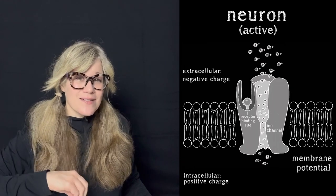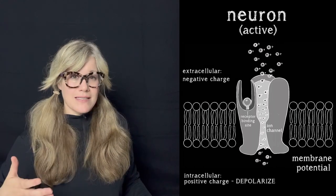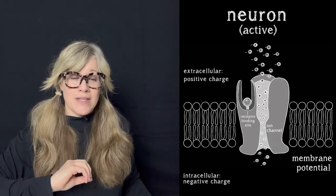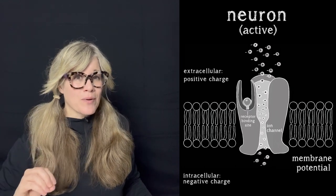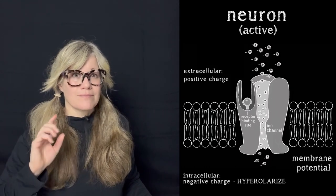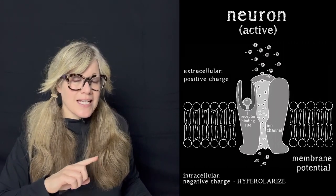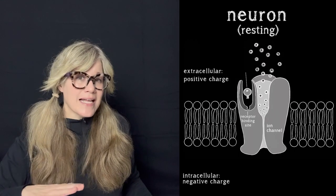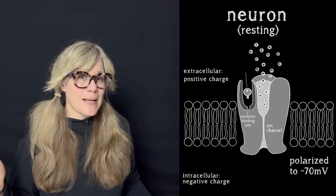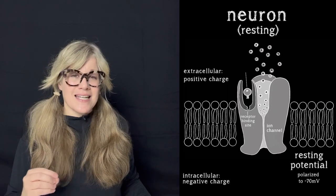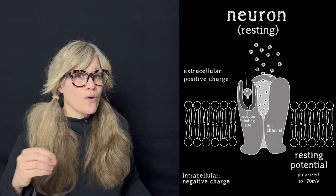If an influx of positively charged ions cross the membrane into the intracellular space, the membrane depolarizes. If more negative ions enter the intracellular space, or positive ions leave, it becomes even more negatively charged and the membrane hyperpolarizes. Another important thing to know is that when a neuron is not active, it is at rest. When it is at rest, the electrical charge of the membrane is polarized at roughly minus 70 millivolts. This is called resting potential, and it is the set point which determines whether the membrane depolarizes or hyperpolarizes.